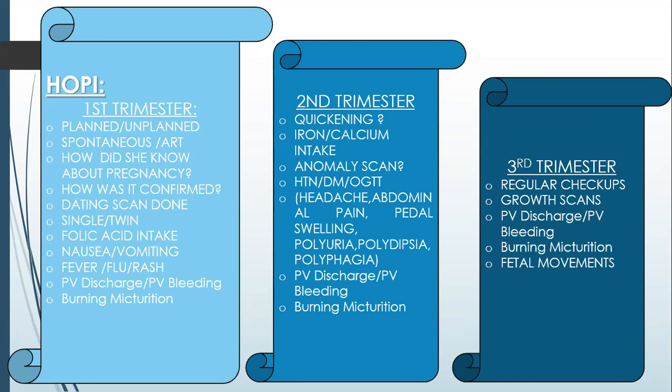In the second trimester, ask about quickening — at which month she felt the first fetal movement. Ask about iron and calcium intake, whether she has done the anomaly scan and at which week or month. Rule out pregnancy-induced hypertension or gestational diabetes by asking about headache, abdominal pain, pedal swelling, polyuria, polydipsia, or polyphagia. Also ask whether she has taken the oral glucose tolerance test in the second trimester. Inquire about per vaginal discharge, per vaginal bleeding, or any burning micturition.